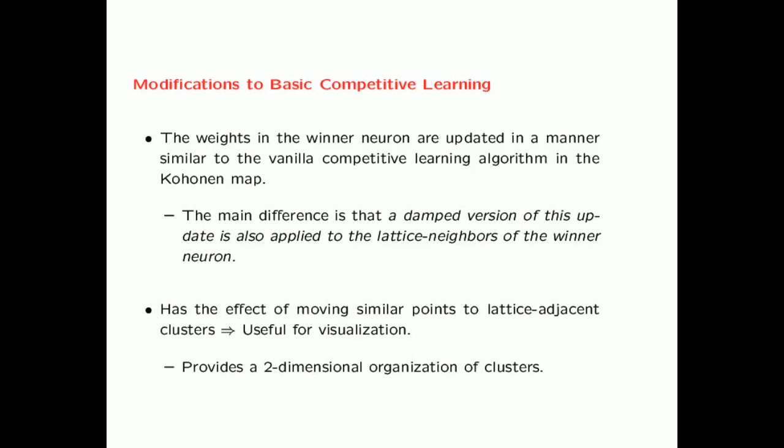The main difference from basic competitive learning is that the weights of the winner neuron are updated in a similar manner, but a damped version of the update is also applied to the lattice neighbors of the winner neuron. In the original algorithm, you only pick one winner neuron and update its weights. Here, you not only update the winner neuron but also provide similar — though smaller — updates to neurons near it. By applying a similar update to lattice neighbors, similar points are moved to lattice-adjacent clusters, which is what provides the two-dimensional organization.